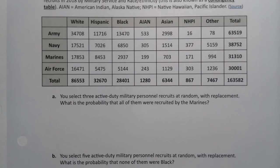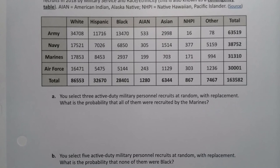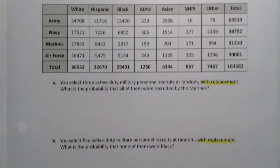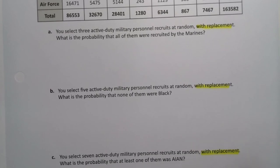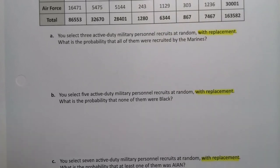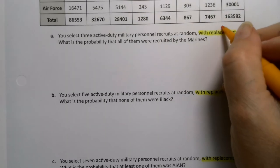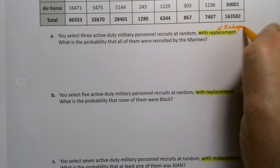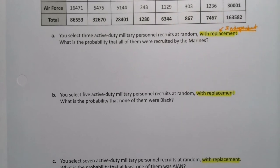You're going to select three active duty military personnel at random with replacement. There it is again. So we have to have with replacement for all three portions of this, because otherwise we would be in a different section of the course. We need that with replacement in order to be independent so that we can use the multiplication rule and rule number five for the at least one rule. So that's required.